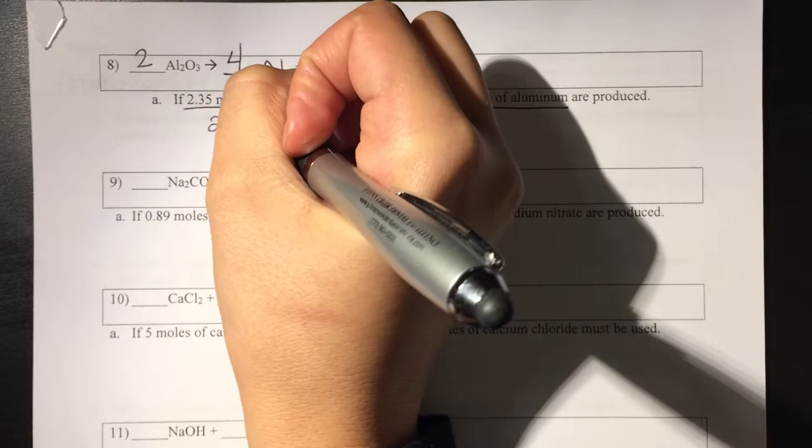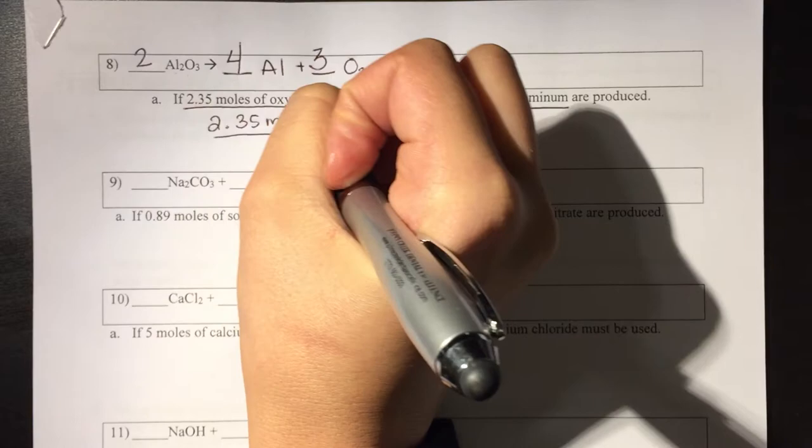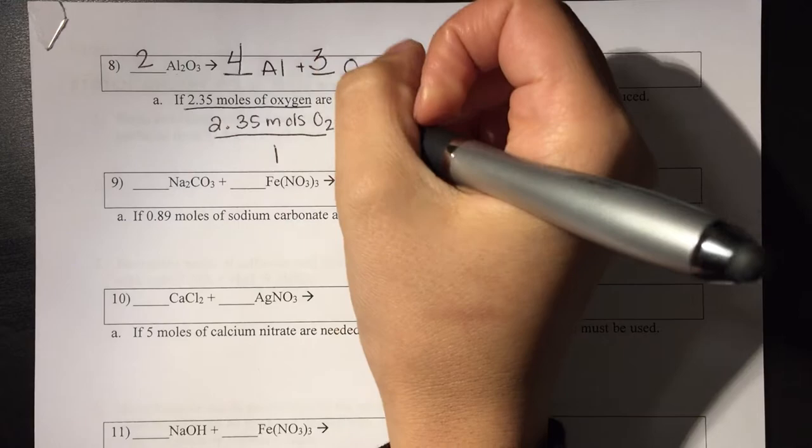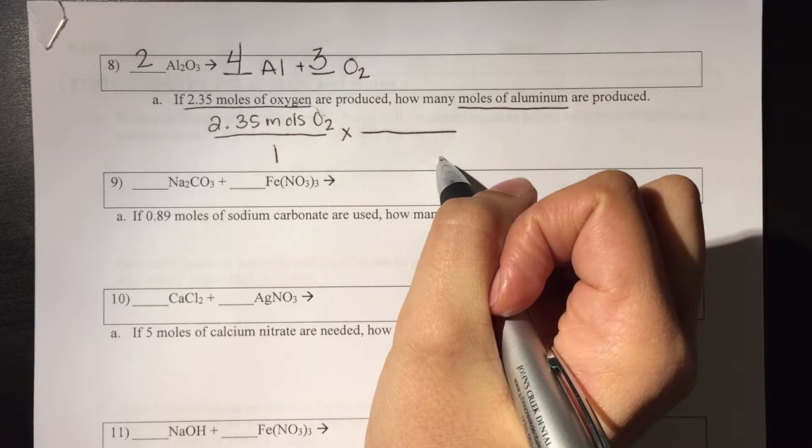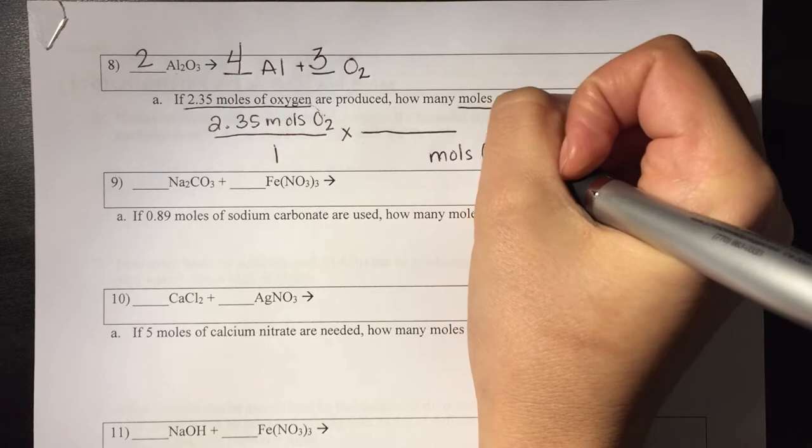We're going to take our given, 2.35 moles of oxygen, and we're going to put that over one, and then we're going to multiply this by the required mole ratio. As before, whatever unit I see up here is going to have to go down here in order for me to be able to cancel it out. So this is going to be moles of oxygen.